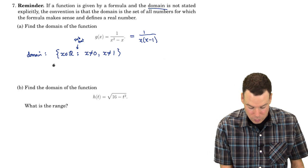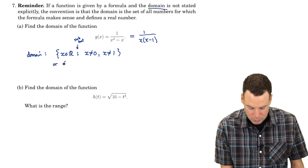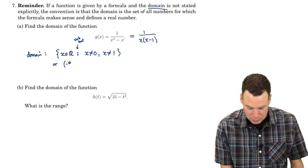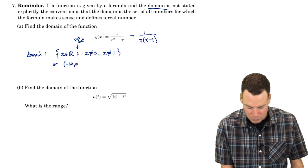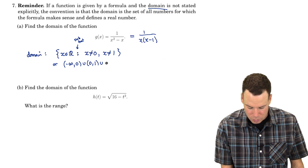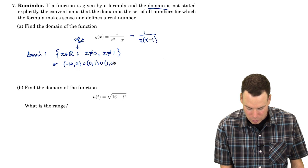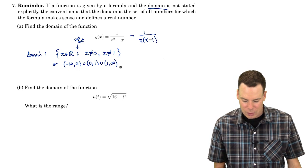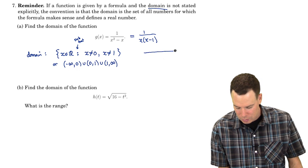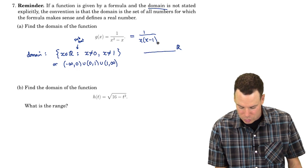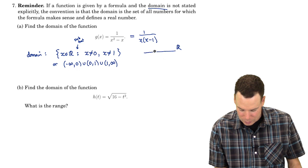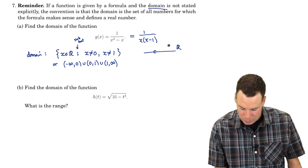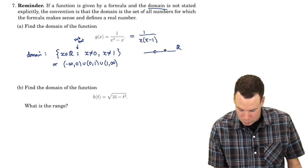If you prefer interval notation, you could write it as the set of all numbers from negative infinity to zero, union zero to one, union one to infinity. I had to split it into three intervals because there were two points I was removing from the real number line: zero and one.